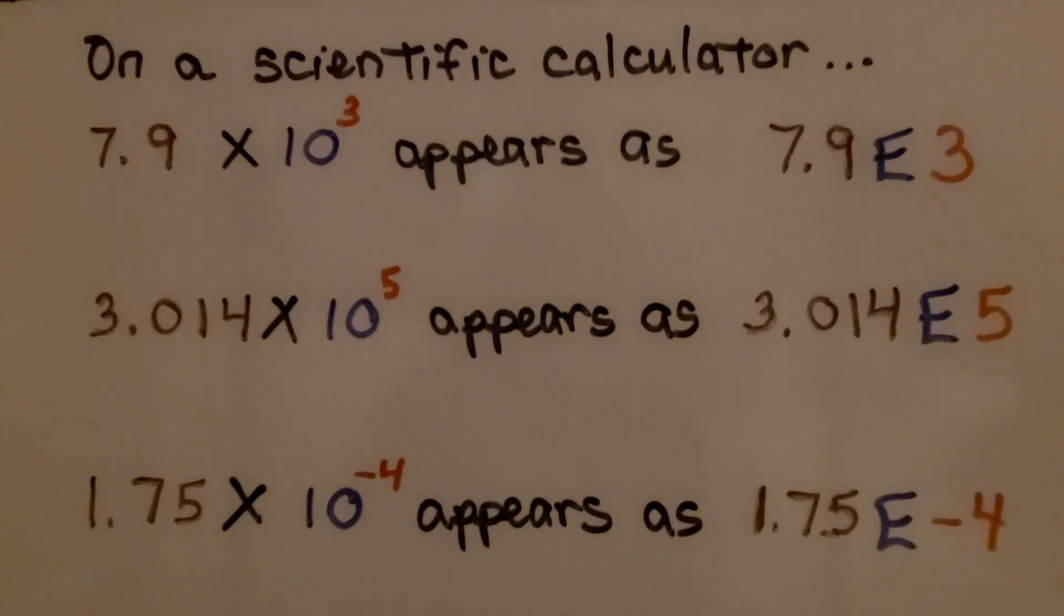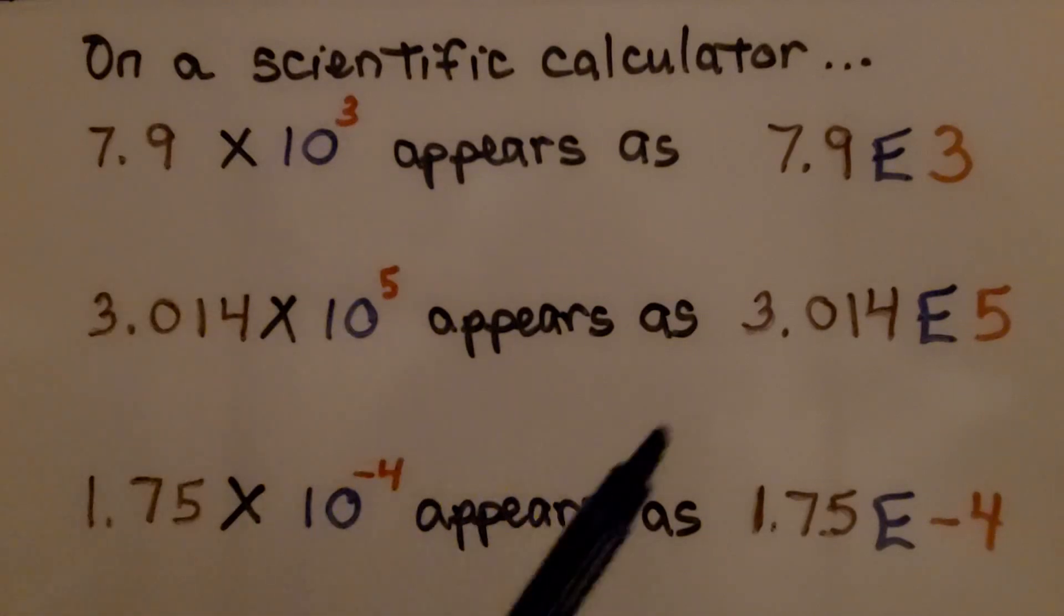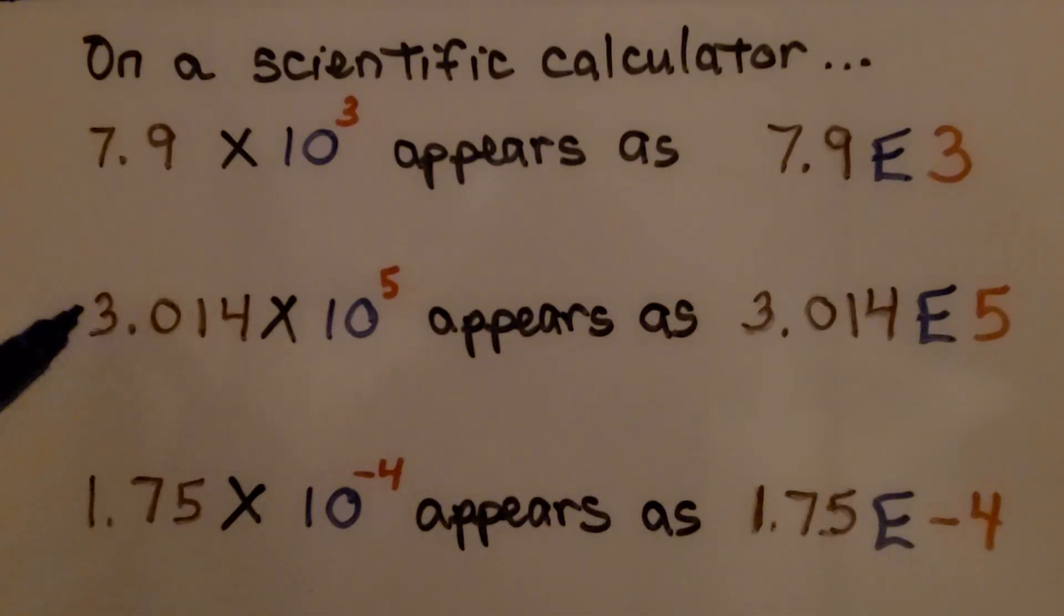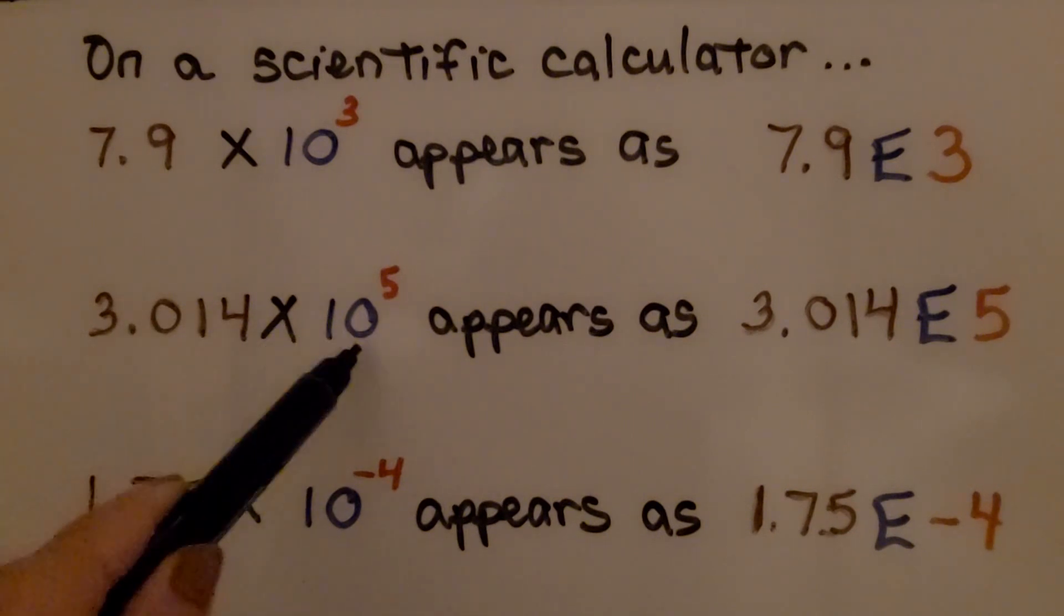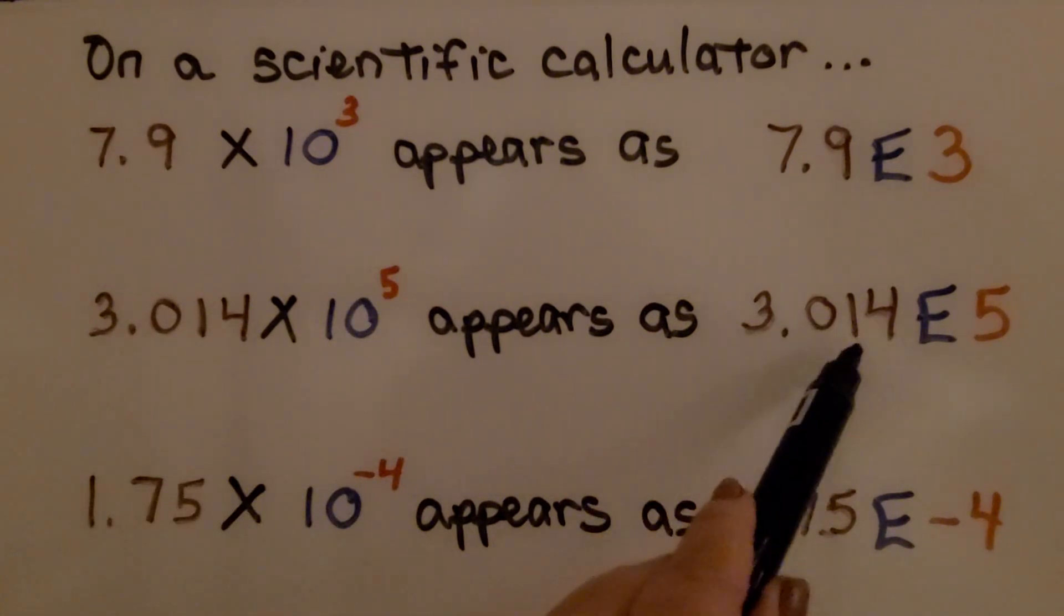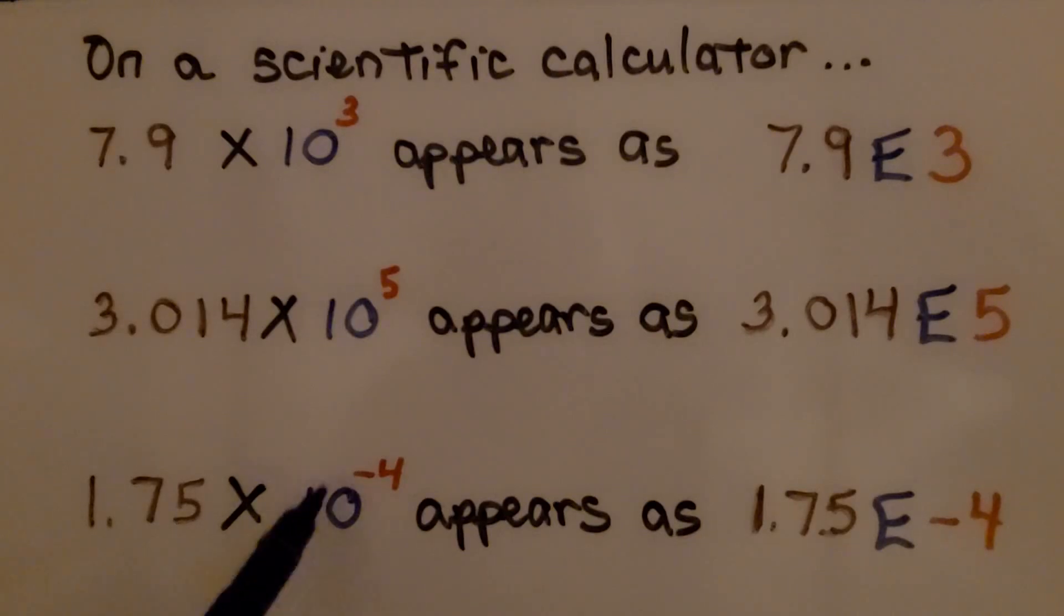On a scientific calculator, 7.9 times 10 raised to the 3rd power appears as 7.9E3. 3.014 times 10 raised to the 5th power appears as 3.014E5. 1.75 times 10 raised to the negative 4th power appears as 1.75E minus 4.